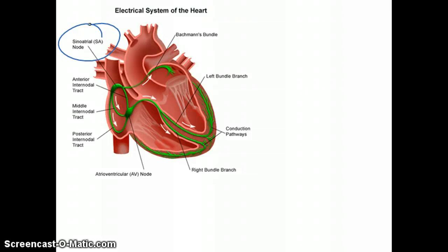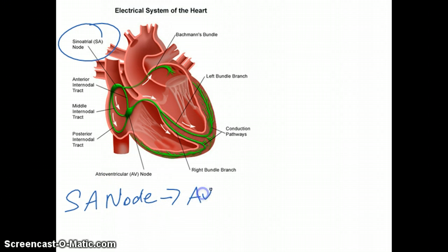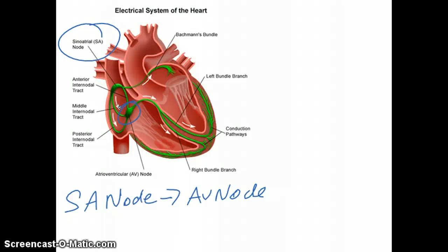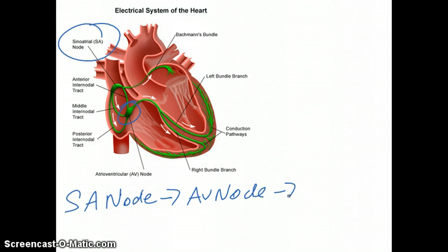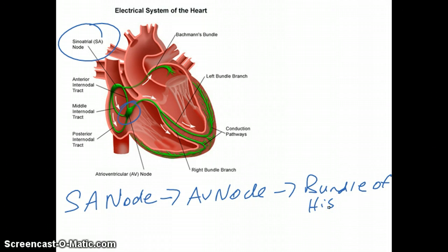From there, the electrical impulse travels to the AV node. We start with the SA node, and it then goes to the AV node. The purpose of the AV node is to delay the electrical signal for just a fraction of a second, which allows the ventricles to completely fill with blood. From the AV node, the signal goes to the bundle of His, sometimes referred to as the AV bundle.